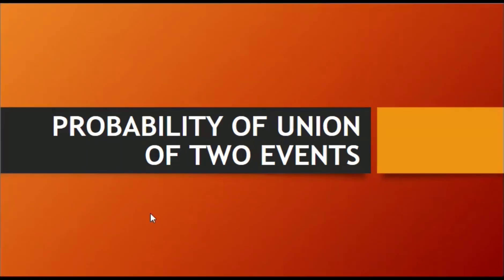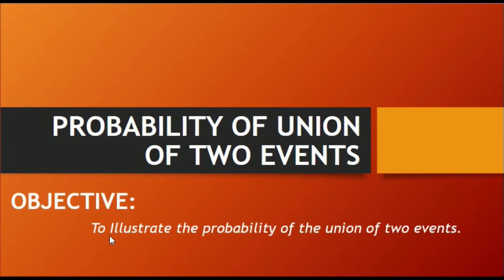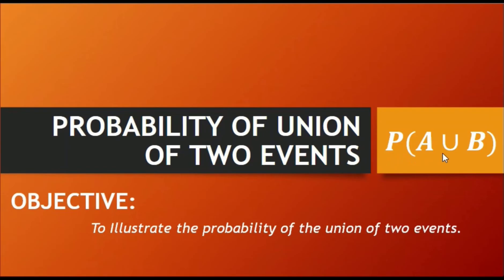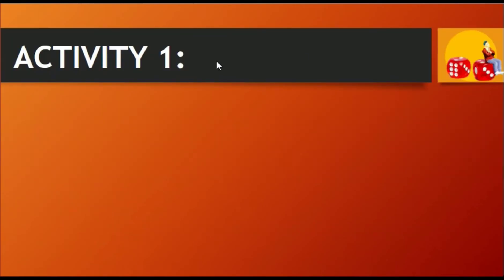Good day, my dear students! You are here to learn how to illustrate the probability of the union of two events, which is denoted by this symbol, read as the probability of A union B. Let's begin this episode with Activity 1.